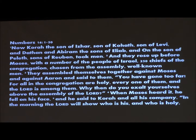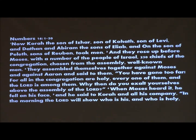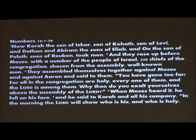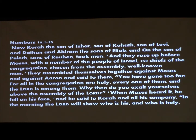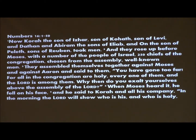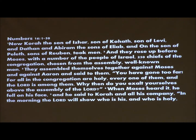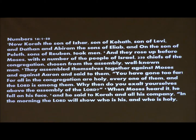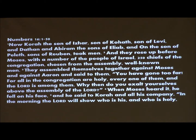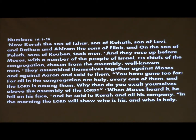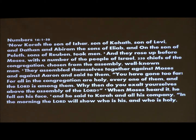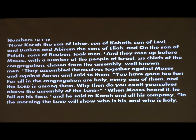In Numbers chapter 16 there are 50 verses that talk about this. Korah, the sons of Ishar and Kohath son of Levi, and Dathan and Abiram the sons of Eliab, and On — don't forget about On, he was there too, but On got smart and stepped away when he saw what was going down. The son of Paleth, sons of Reuben, took men and rose up before Moses with 250 chiefs of the congregation, chosen from the assembly, well-known men. They assembled themselves together against Moses and Aaron and said, 'You have gone too far.'